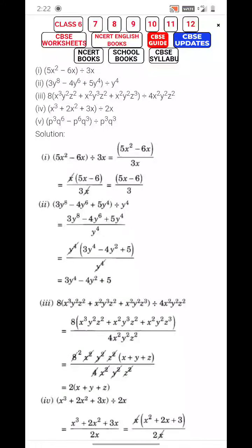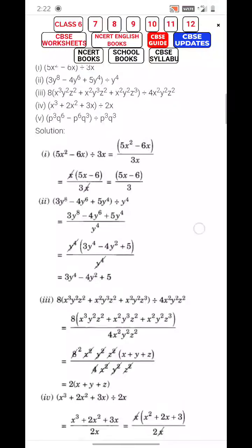For 3y⁸ minus 4y⁶ plus 5y⁴, you have to take the common factor. What is common is y⁴ and the rest remains. In the denominator we have y⁴, which gets cancelled. So we have 3y⁴ minus 4y² plus 5 as the answer.